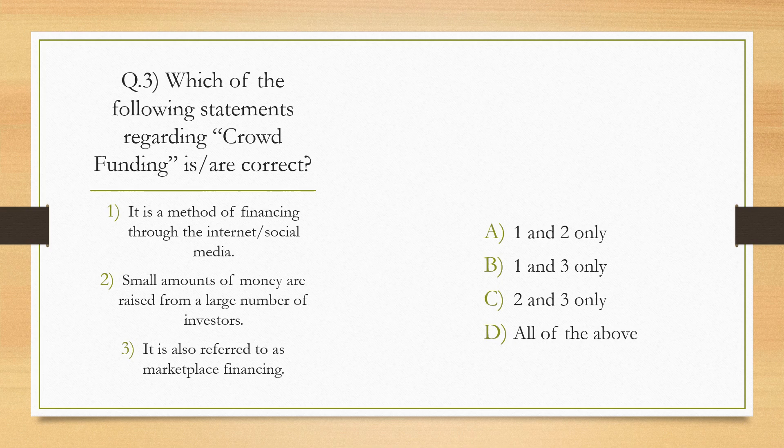Which of the following statements regarding crowdfunding is or are correct? It is a method of financing through the internet or social media. Small amounts of money are raised from a large number of investors. It is also referred to as marketplace financing. Options: 1 and 2 only, 1 and 3 only, 2 and 3 only, D: all of the above. The correct answer is D — all of the above.